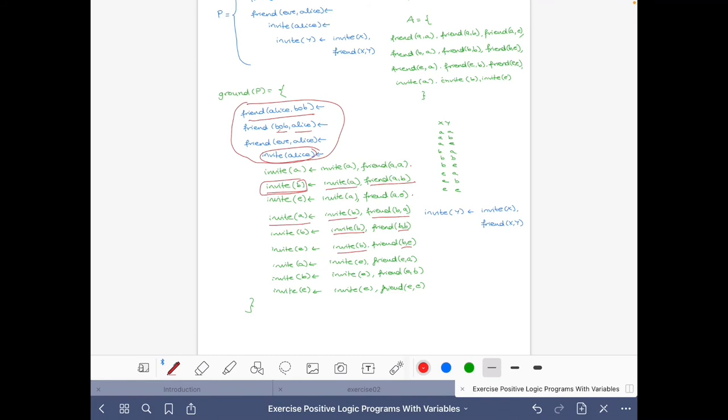We are not deriving anything new. And now with the other rules, we do not have friend Bob Bob or friend Bob Eve. So we cannot derive anything else. Hence, we know that we have just found the unique stable model of this positive logic program. So the stable model is friend Alice Bob, friend Bob Alice, friend Eve Alice, invite Alice, and fortunately for him Bob was also invited.